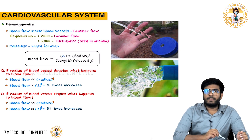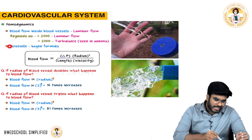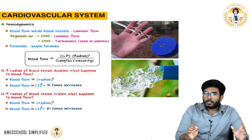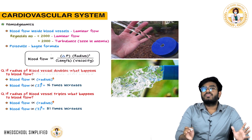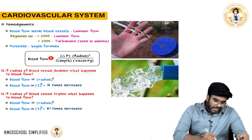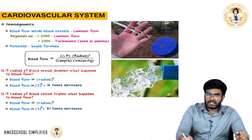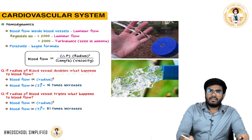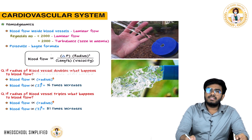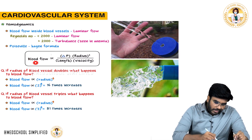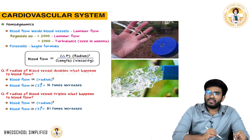Now let's discuss about the Poiseuille-Hagen formula. What exactly is this formula telling us? It tells us which factors blood flow is dependent on. Blood flow is directly proportional to the pressure difference and radius of the blood vessel. Blood flow is inversely proportional to the length of the blood vessel and viscosity of the fluid.